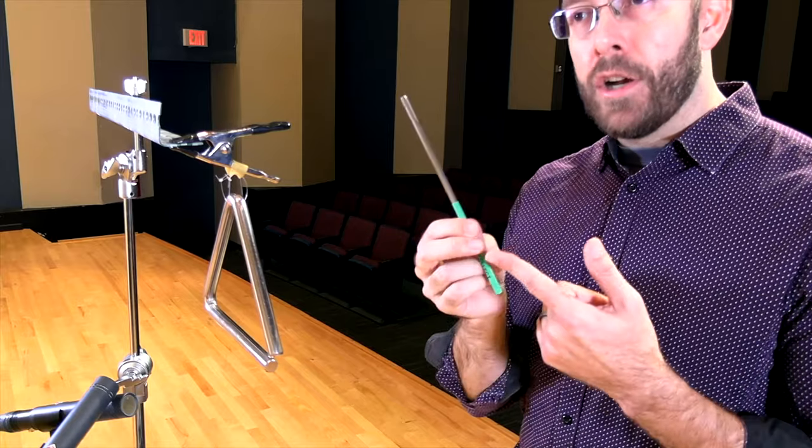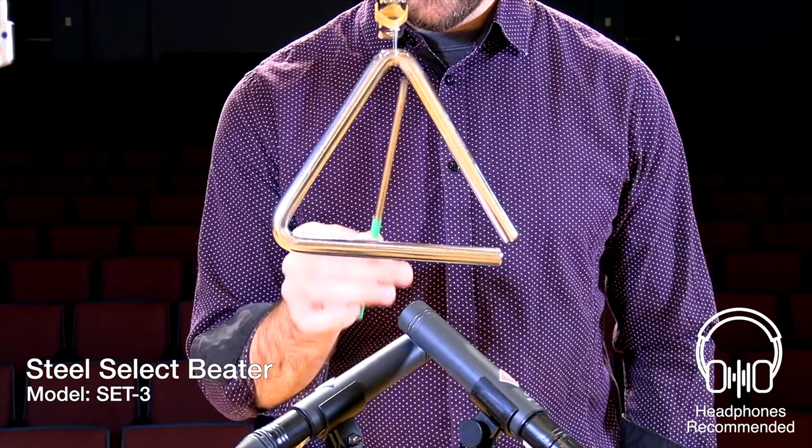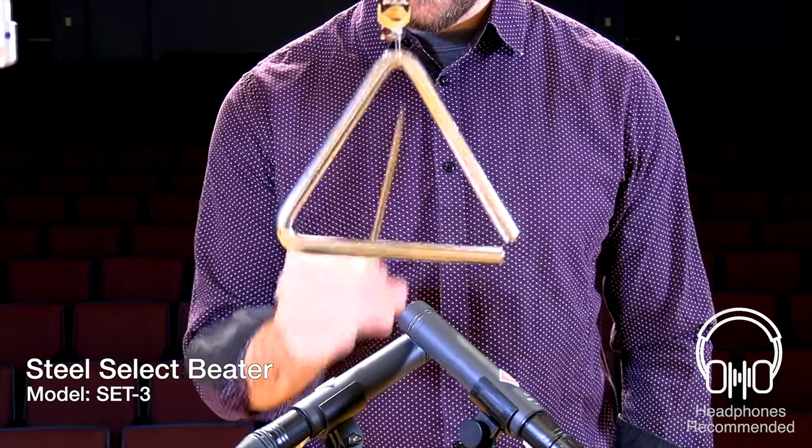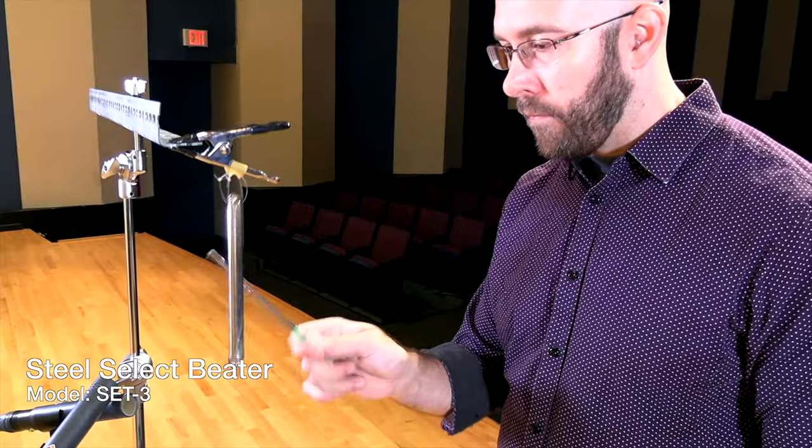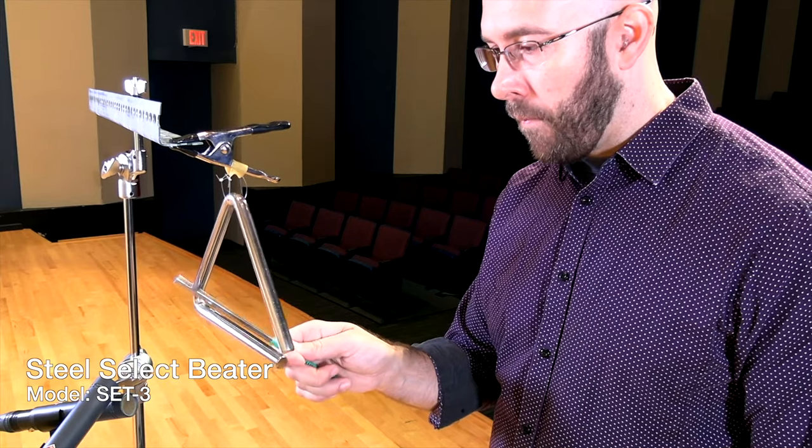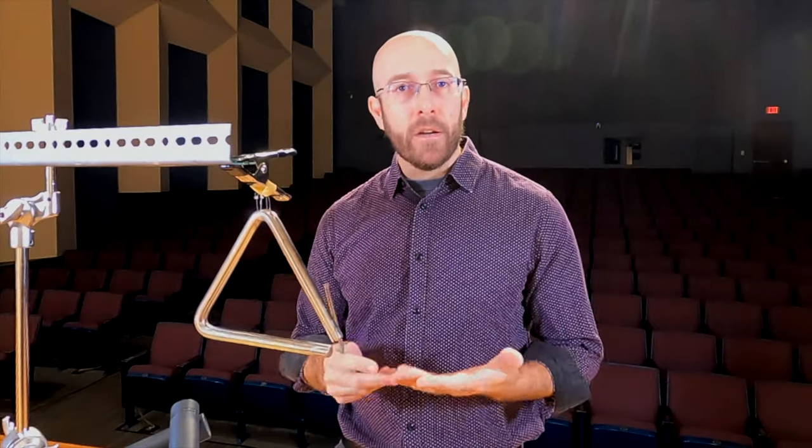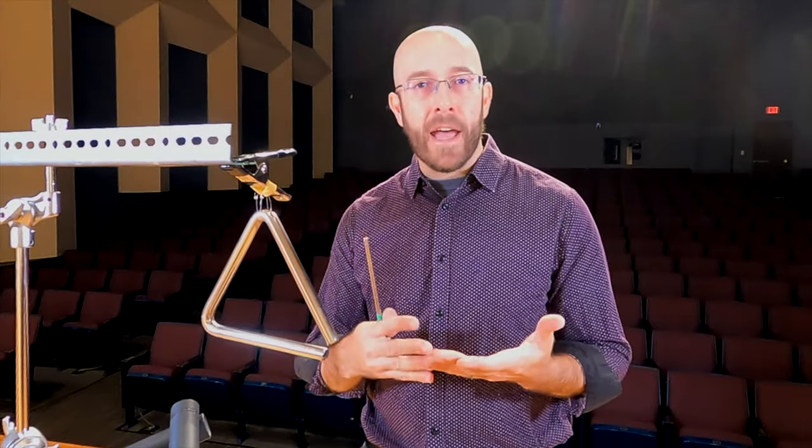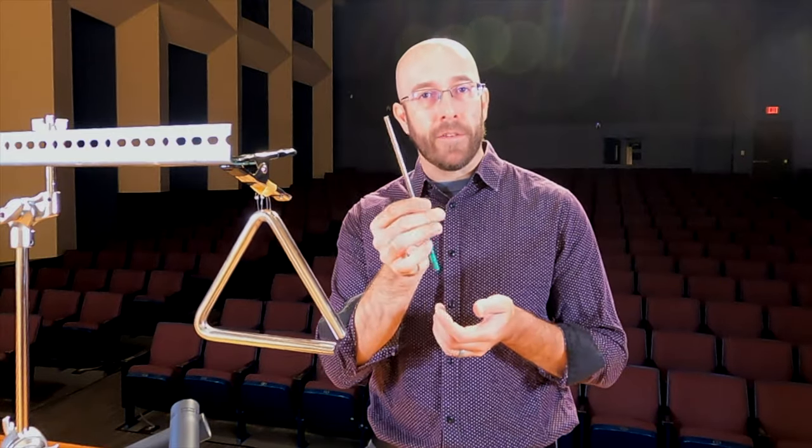Here is the large stainless steel beater. As you can hear, very bright, a good bit of attack, a lot of front end on it, something that works great especially for rhythmic triangle stuff, or steel band, or something that's a really articulate passage. The stainless steel is great for those.